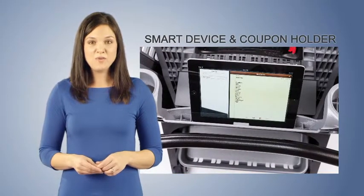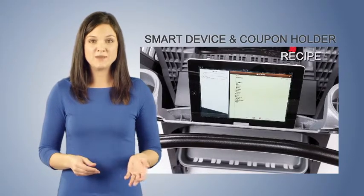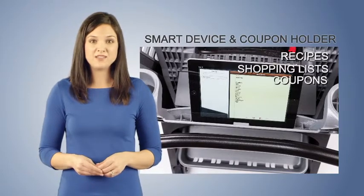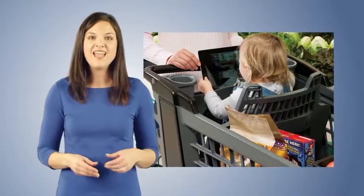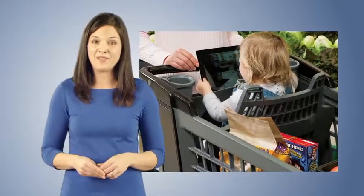With the Innova smart device and coupon holder, customers can look at recipes, shopping lists, and coupons. Or, customers with children can turn their smart device toward the child safety seat and keep their child occupied while they shop.